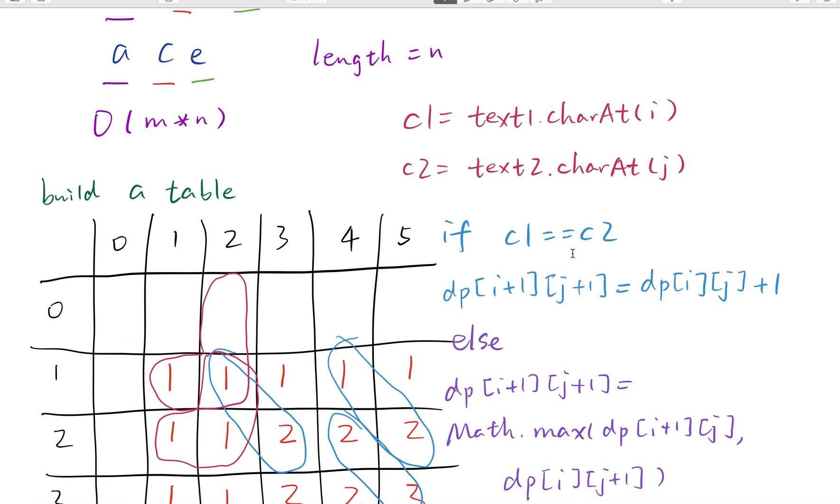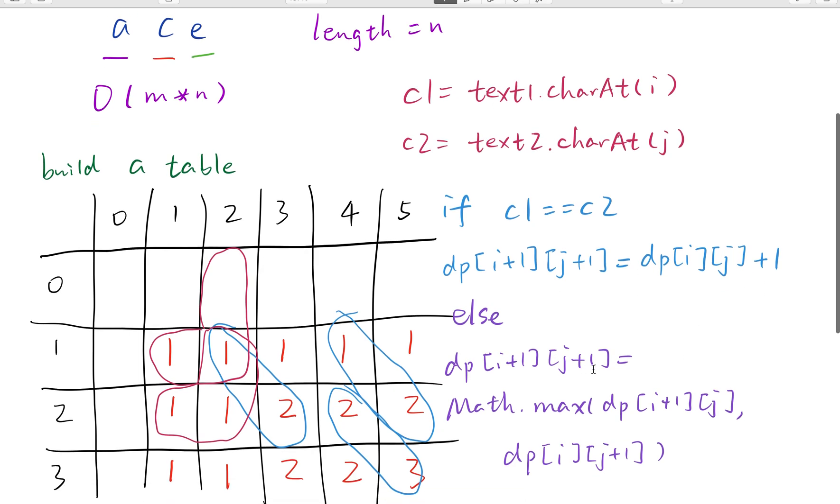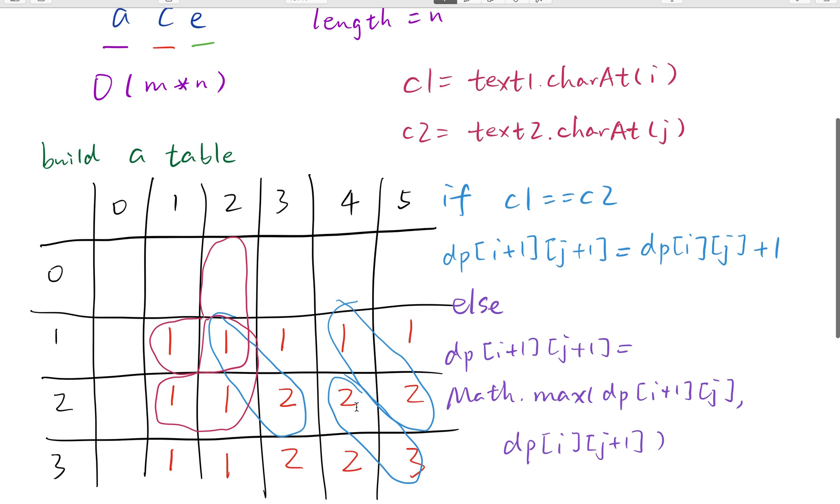If they are the same, we move backwards, DP[i-1][j-1] plus 1. If not, if these two characters are not equal, we just get its left and upper max value. So that's it.